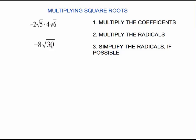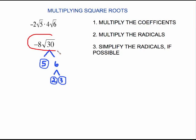We need to check to see if the square root of 30 will simplify. The way to do that is to do a factor tree on 30. You need to look for pairs. There are no pairs, which means the square root of 30 will not simplify any further, and therefore this is your final answer.